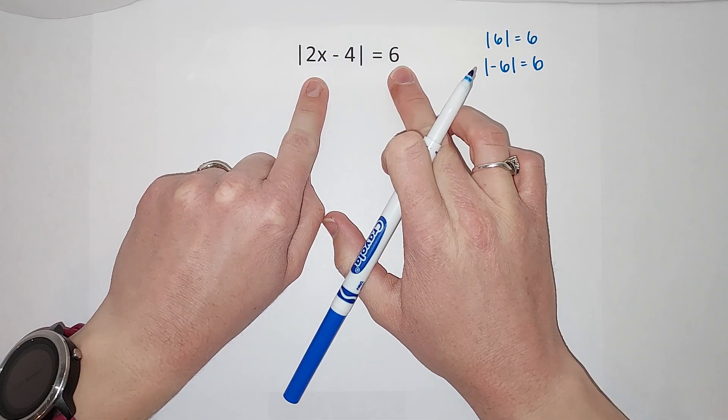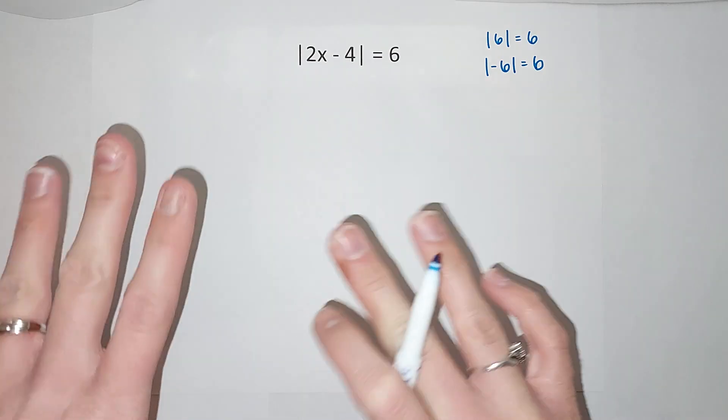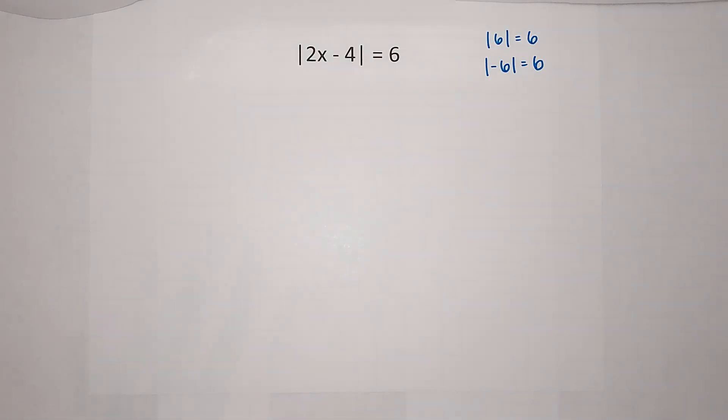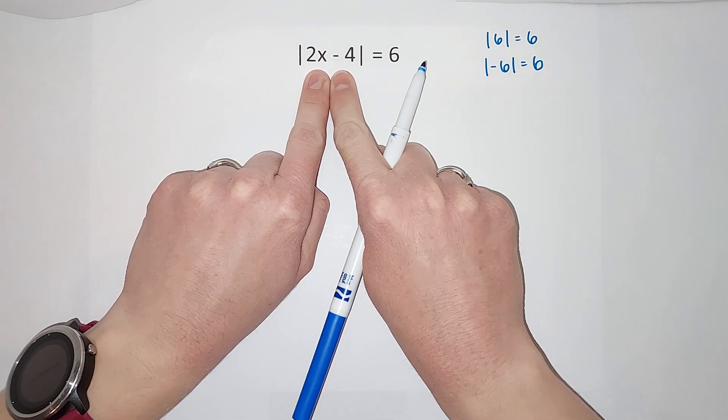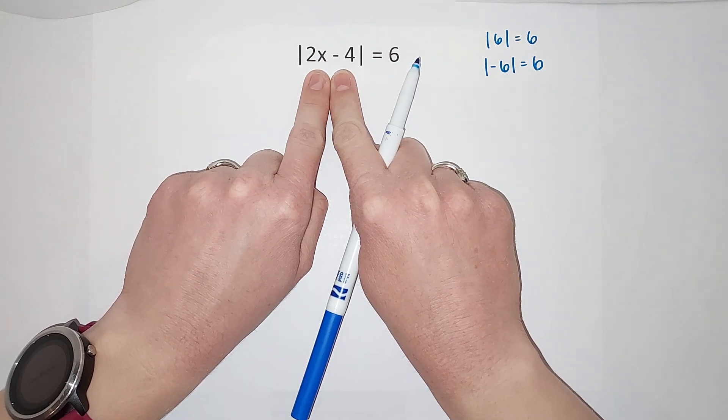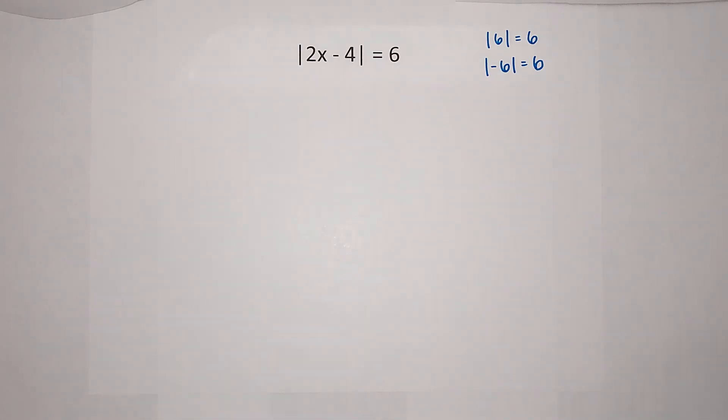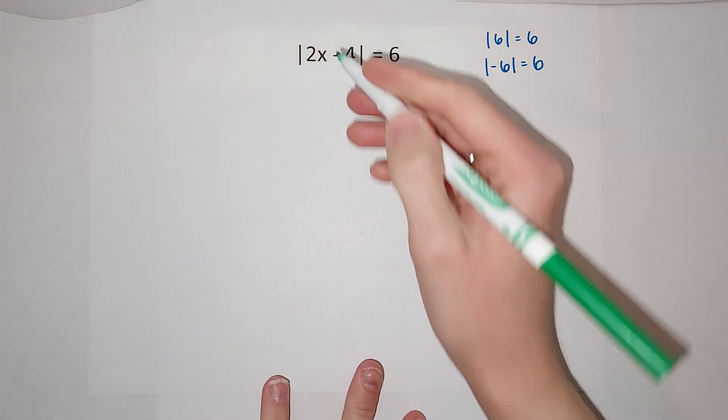So basically we want this to be equal to either six or negative six. Does that make sense? We're going to actually have two answers when we do absolute value, because there's going to be two possible answers for x. Let's see what that looks like.